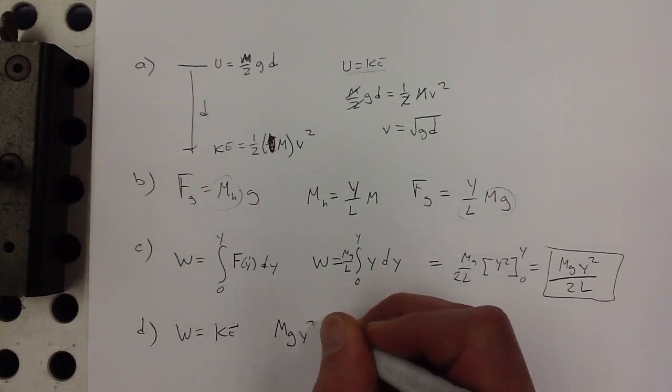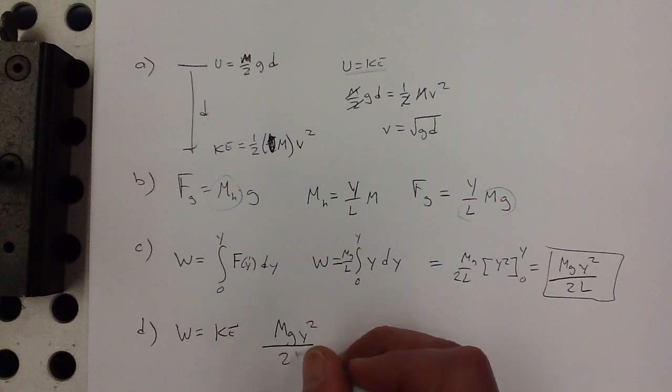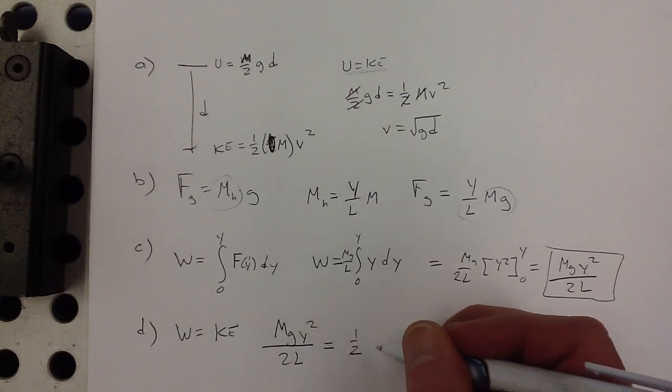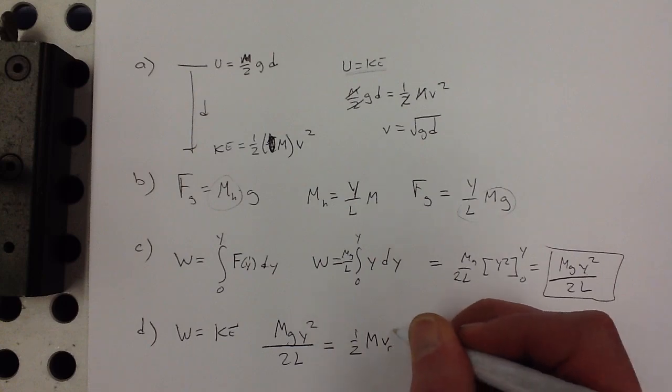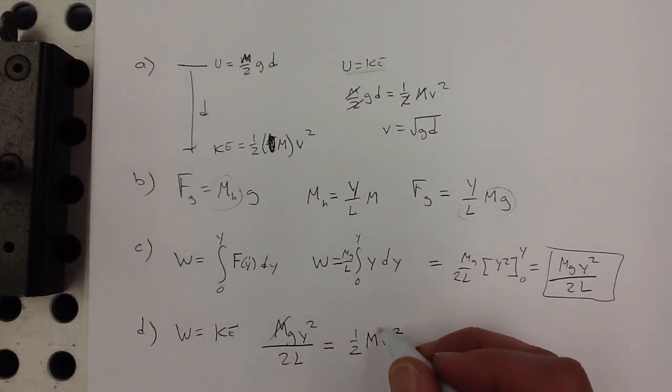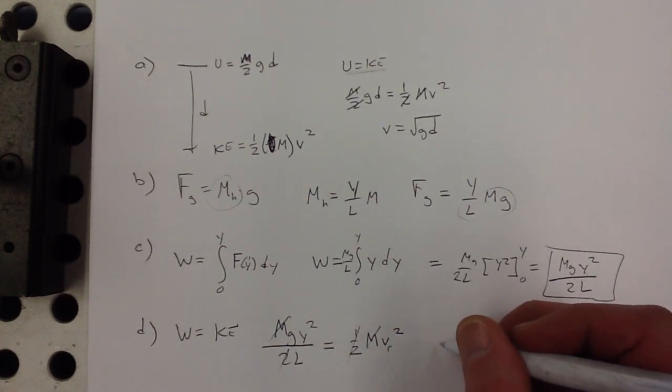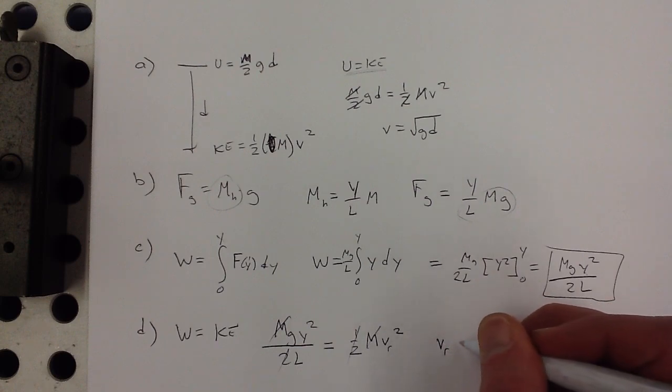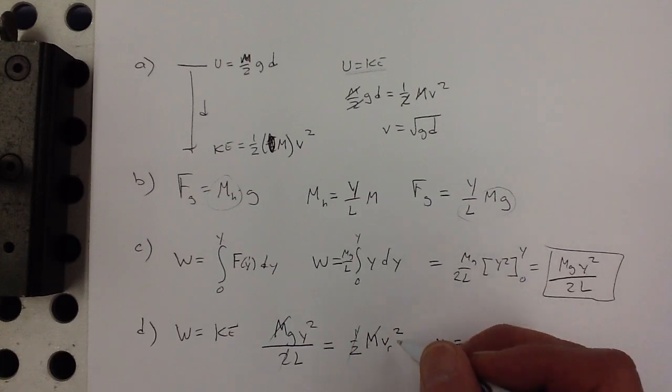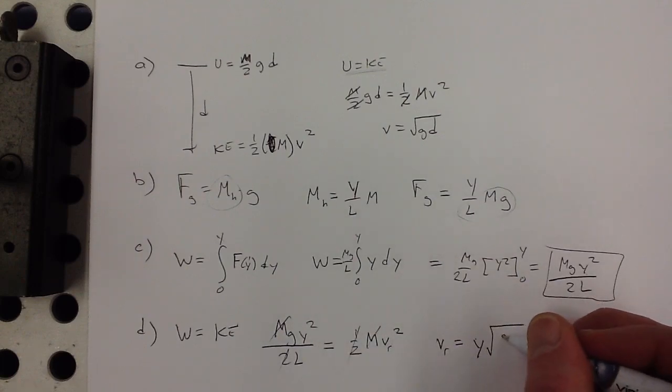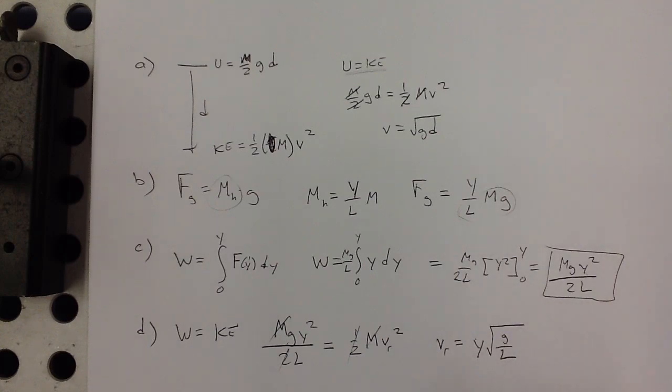m g y squared over 2 l will be equal to 1 half m. The whole rope is moving, so it's the whole m, v r squared. m's cancel out. The 1 half's cancel out. So what do we get? I've got v r squared is equal to the square root. So that would be y times the square root of g over l. Looks like. Better check these answers.